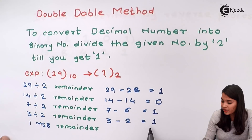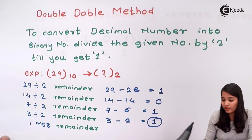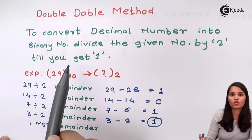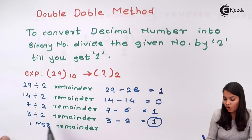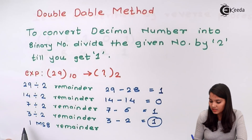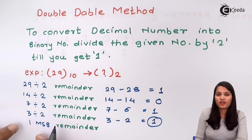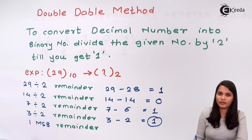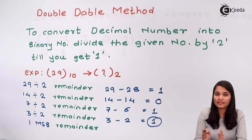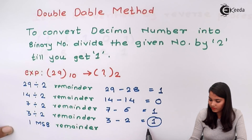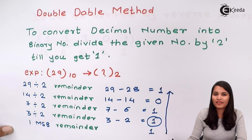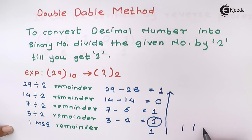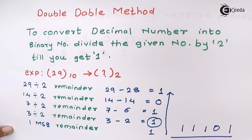Now just focus here. We have got the quotient value as 1. We have to divide the given number by 2 until we get the quotient value as 1. Right now we have got the quotient value as 1. The last quotient value of 1 will always be the MSB — the most significant bit, that is the leftmost value. So while writing the decimal number into the binary number, you start writing from the MSB, using a bottom-to-top approach. So the binary conversion is: 1, 1, 1, 0, 1. This is your final binary number in base 2.